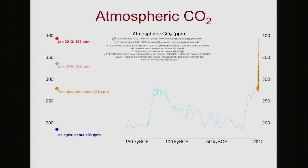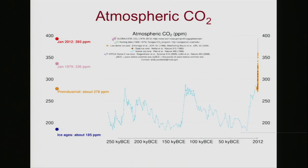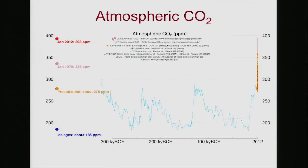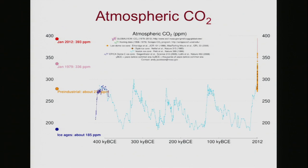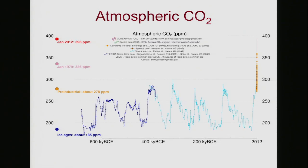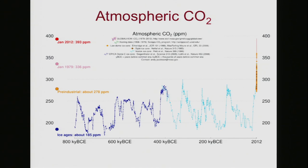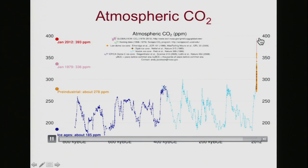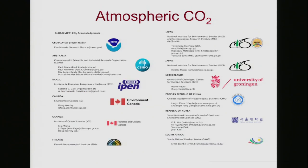As we go way back into deep time, looking at changes over tens of thousands of years, carbon levels show a cycle. A lot of people talk about natural variation in CO2 — and yes, that's true, there has been natural variation. It went from about 200 parts per million up to nearly 300 parts per million. But never before in the last 800,000 years did it get up to nearly 400 parts per million. We're in a new realm, never seen in the last 800,000 years.